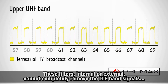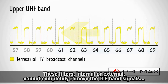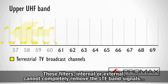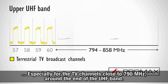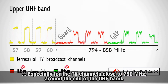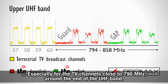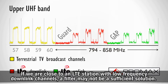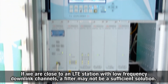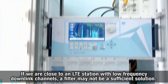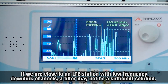These filters, internal or external, cannot completely remove the LTE band signals, especially for the TV channels close to 790 MHz, around the end of the UHF band. If you are close to an LTE station with low-frequency downlink channels, a filter may not be a sufficient solution.